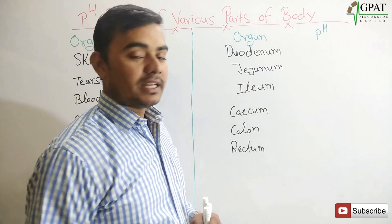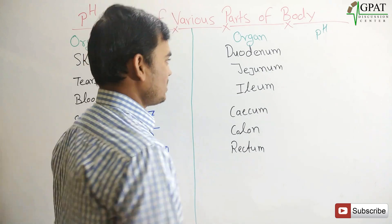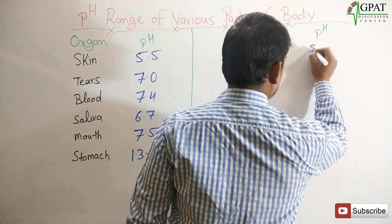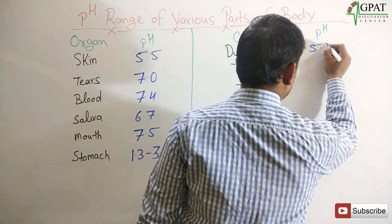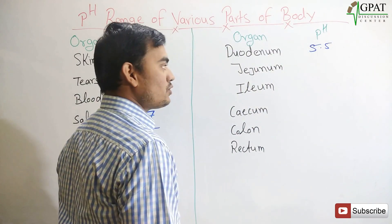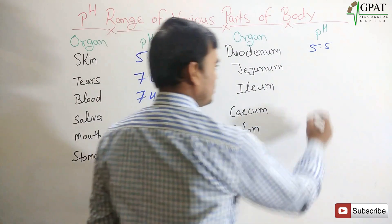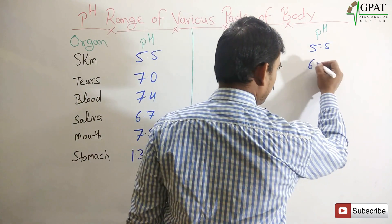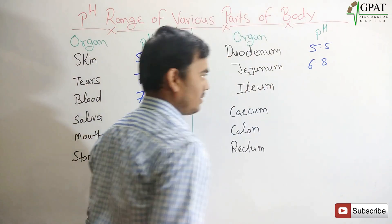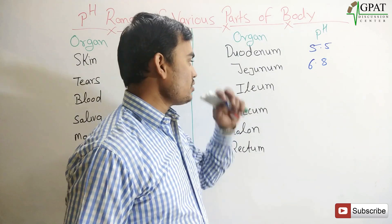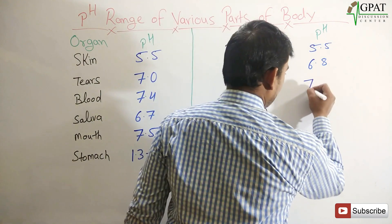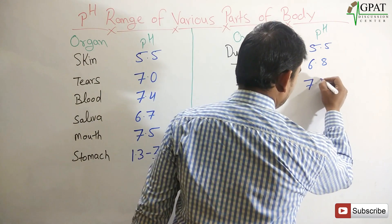The pH range of the duodenum is 5.5. The pH of the jejunum is 6.8. The pH of the ileum is 7.2.